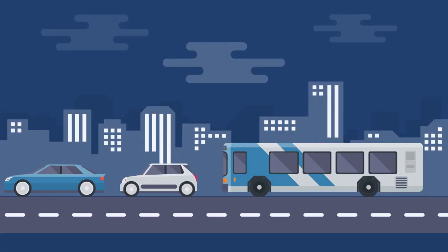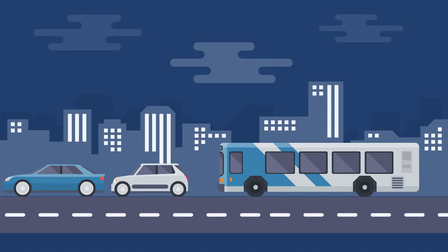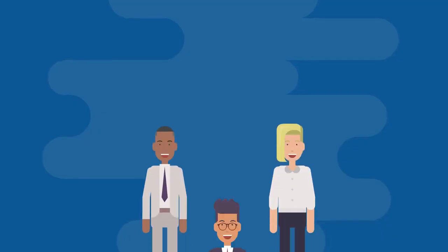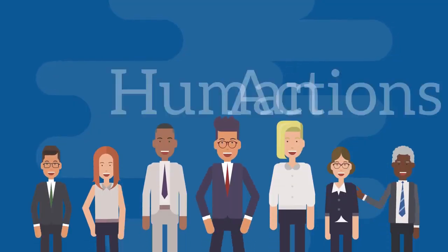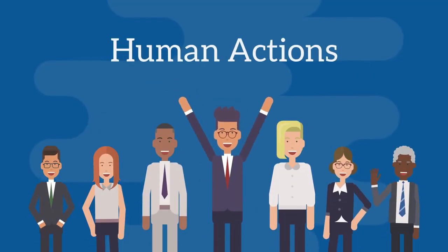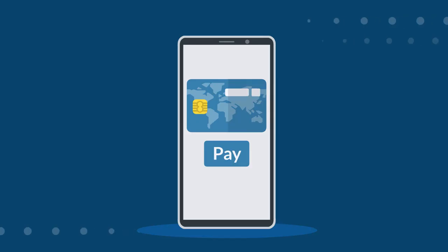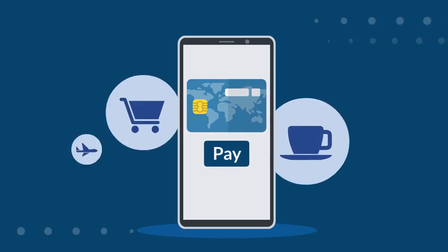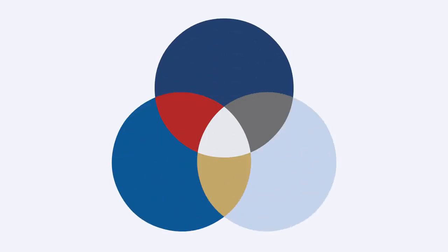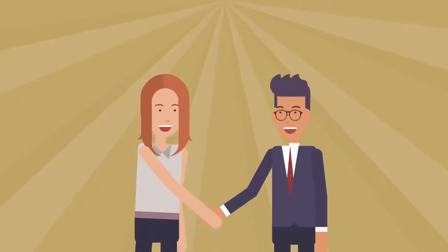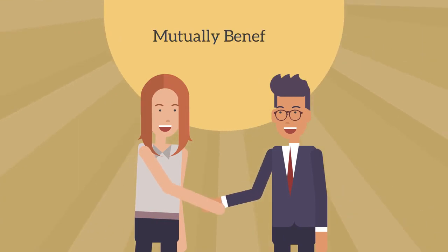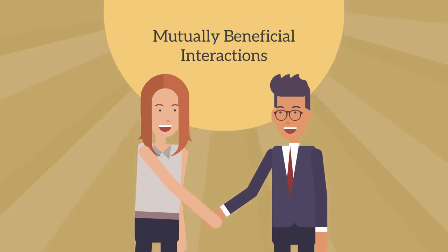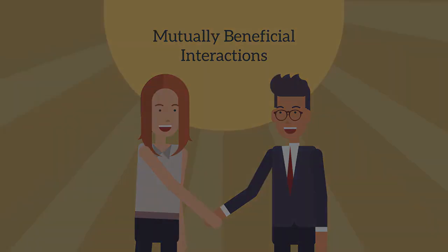Although these are aspects of an economy, economics at its core is about human actions. It's about the choices and actions we make as individuals — our individual wants, needs, and abilities — and about how we interact with others to benefit each other and build the society around us.